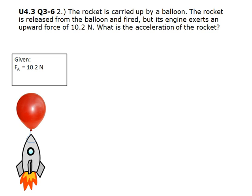We are given the force applied by the engine, which is 10.2 newtons. First we must find the net force. This can be found by adding the applied force from the engine and the gravitational force that is pulling down on the rocket.